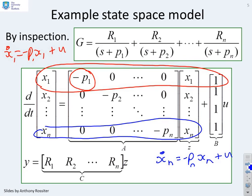You'll see I've got xn dot equals minus Pn xn plus u. So you'll notice I've got a separate row for each differential equation that goes with each of the terms in the partial fraction expansion. And then I reintroduce the residues in the output matrix. So the output is R1 times x1, R2 times x2, and so on. Now hopefully it's obvious to you, but one key thing about this state space expansion is that the A matrix is now diagonal.